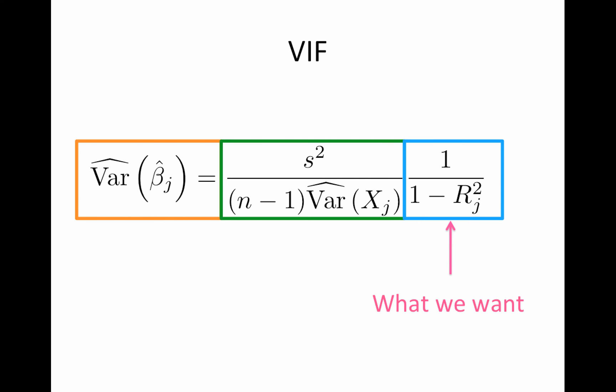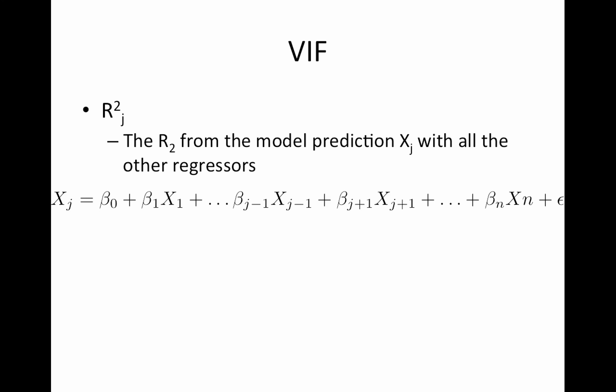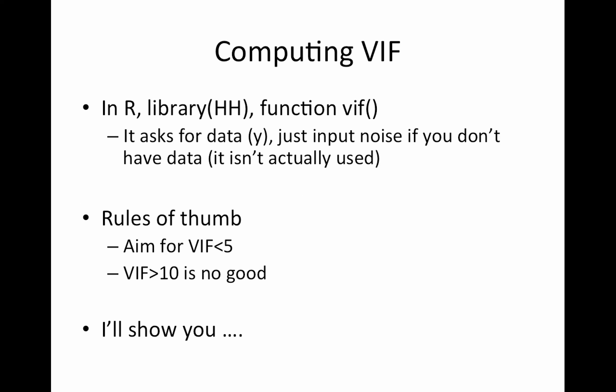And there are various values you can take. Anyway, okay, here are the rules for VIF. So first of all, I'm going to show you in a second, the R library has, R has a library called hh, which has a function called VIF. And it does ask for data, but you can just input noise if you don't have data. It isn't actually used in the calculation at all. And here are the VIF rules of thumb. Your goal is to have a VIF less than five, and VIF greater than 10 is probably not great.